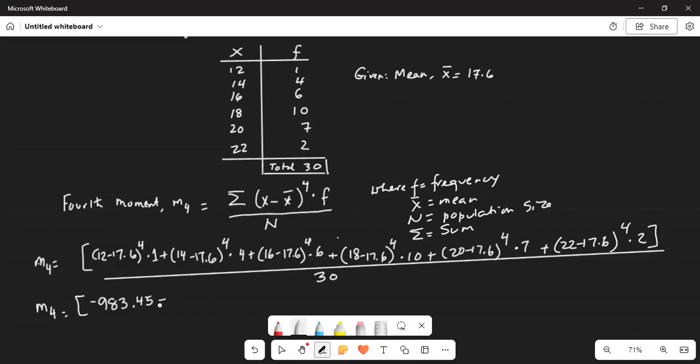Then 14 minus 17.6. This should be positive. Okay, I will correct it. Minus 17.6 then exponent it to 4 and then multiply it with corresponding frequency 4 which is 671.85. And this is positive too.